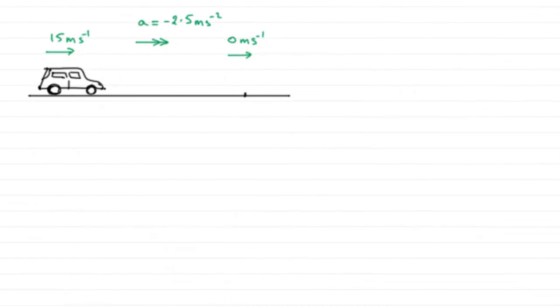Now for this first part, we're told that this car is going at 15 meters per second and then comes to rest with a deceleration of 2.5 meters per second squared. I've drawn a simple sketch here of what's going on.